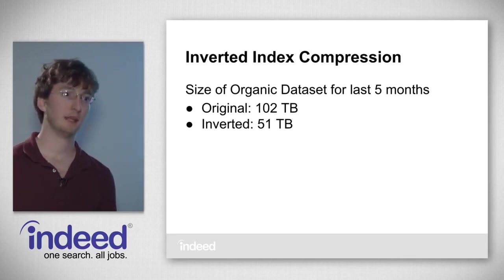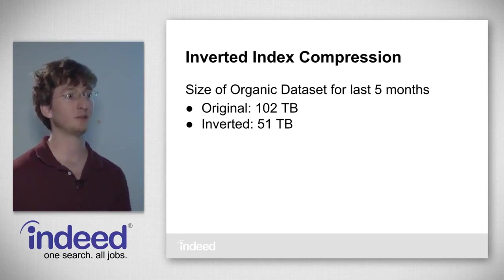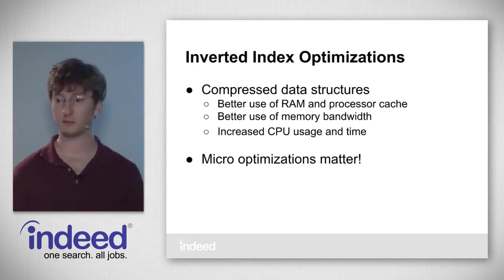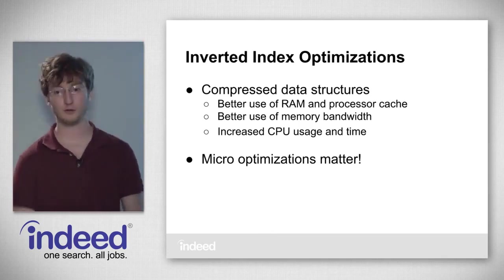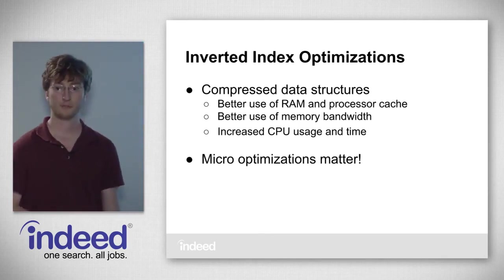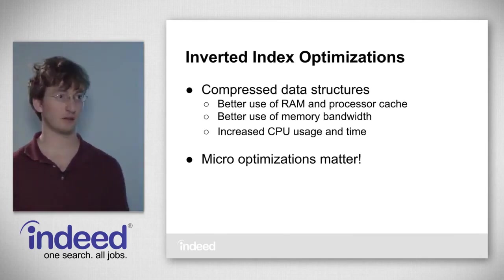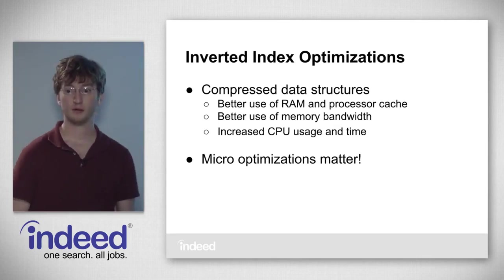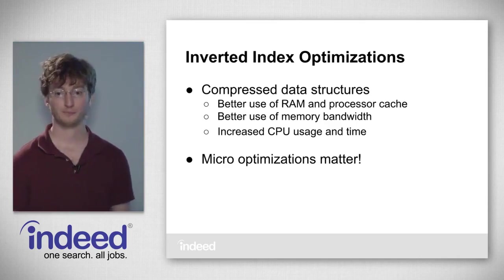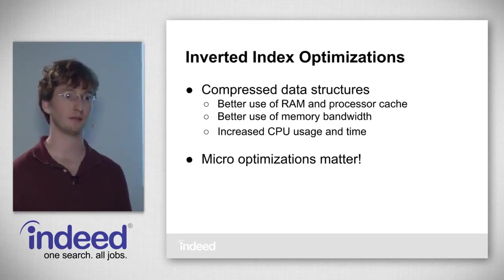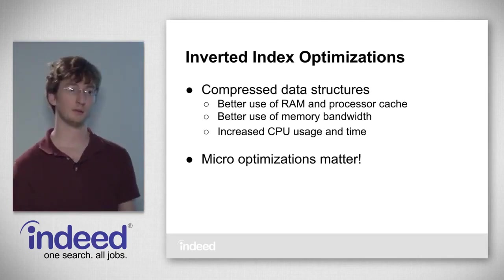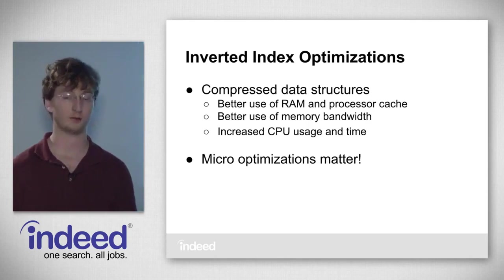In practice, inverted indexes need a lot of optimizations to be fast. The primary type is compression. Compression lets you fit more of your index in RAM, and more RAM means faster access even when compressed — provided your decompressor is fast enough. Counterintuitively, it also makes better use of memory bandwidth: loading compressed bytes from disk means more information per byte transferred, giving higher information throughput. The trade-off is increased CPU usage and time to decompress.